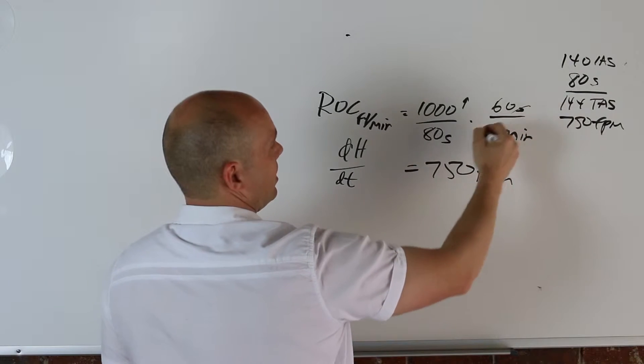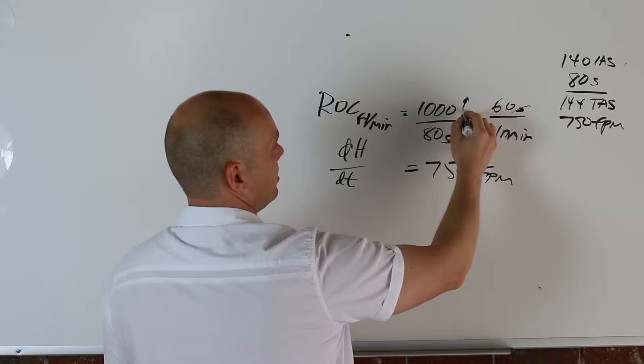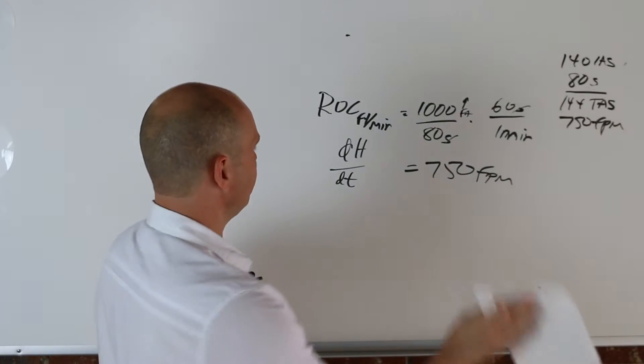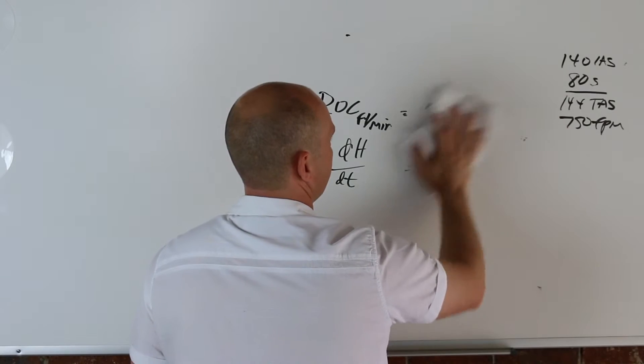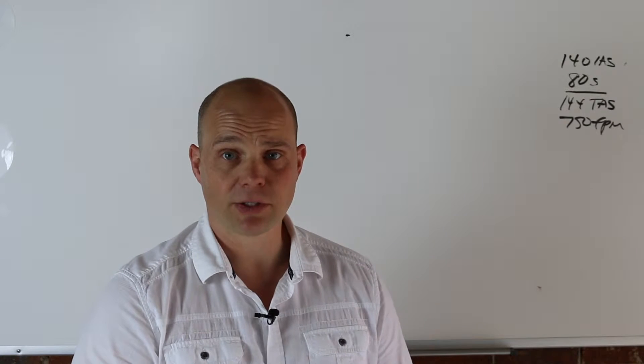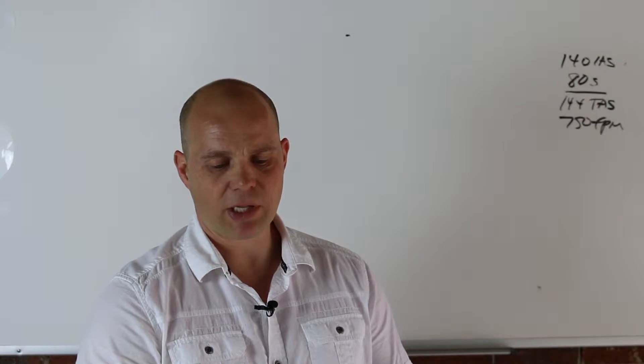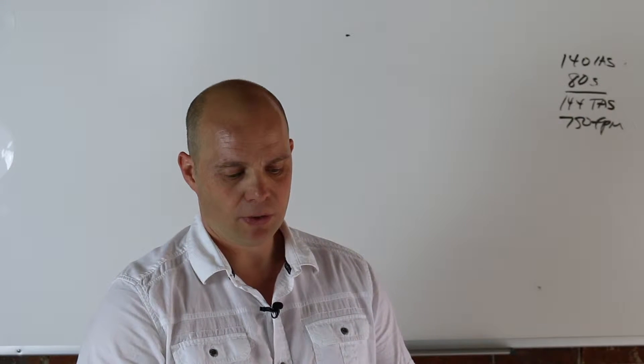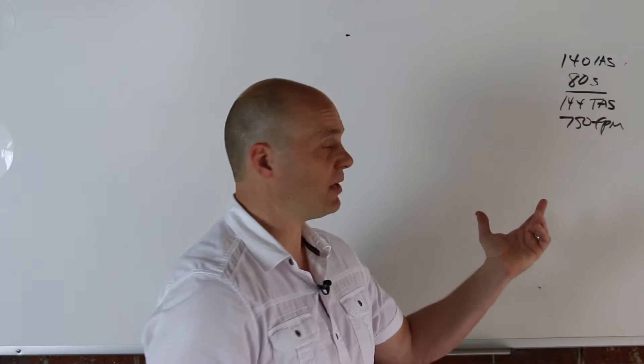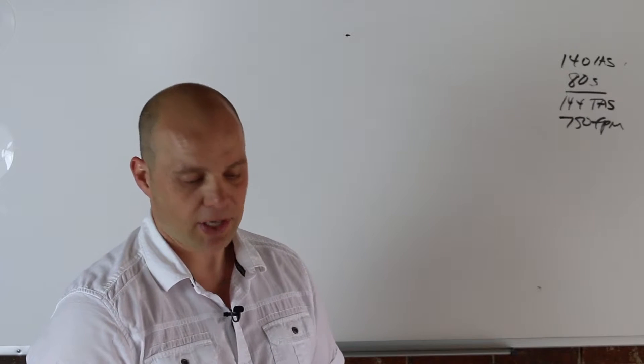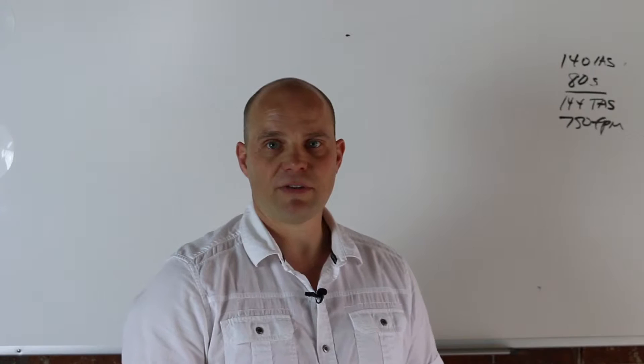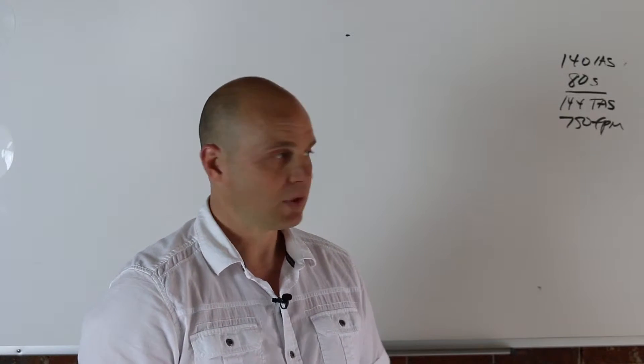The seconds cancel out here, and you're left with feet per minute. For the next part, looking for average rate of climb in knots. So this is really all you have to do is just convert that 750 into knots. So it's in feet per minute, we want it in knots. So we know that there's 6,070 feet in one nautical mile.